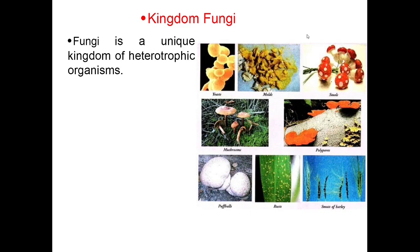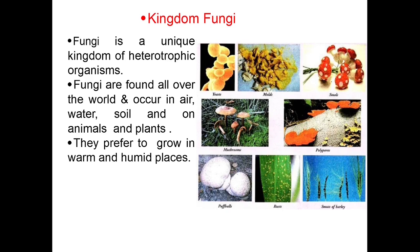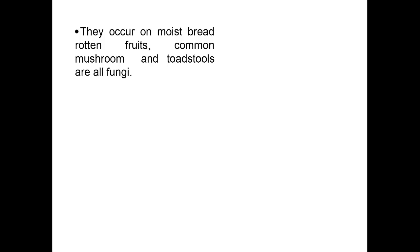Look at the diagram. These are the different members of Kingdom Fungi. Fungi is a unique kingdom of heterotrophic organisms. Fungi are found all over the world and occur in air, water, soil and on animals and plants. They prefer to grow in warm and humid places. They show a great diversity in morphology and habitat. They occur on moist bread, rotten fruits; common mushroom and toadstools are all fungi.